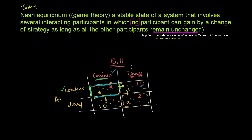So let's think about the different states of this system and think about whether any of them meet this criteria. Let's number them: state one, state two, state three, and state four. If we are sitting in state one, can any of the participants gain by changing their strategy, assuming the other participant is constant?